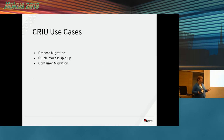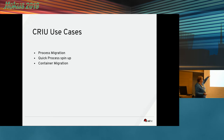So what is CRIU? It's Checkpoint Restore in User Space. It's a Linux utility. It copies the entire process state into files. They use CRIU for process migration, so we know it's going to be able to bring up your JVM on another host if you want. Quick process spin-up, container migration.